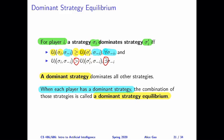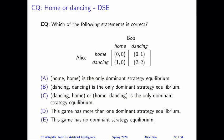Now let's apply the solution concept to the home-or-dancing game. Here's a question: which of the following statements is correct about this game? Option A: home, home is the only dominant strategy equilibrium. Option B: dancing, dancing is the only dominant strategy equilibrium. Option C: one of the other two outcomes is the only dominant strategy equilibrium. Or maybe the game has more than one dominant strategy equilibrium, or no dominant strategy equilibrium at all. Try to determine whether each player has a dominant strategy, and if so, combine them. Take a few minutes and then keep watching for the answer.